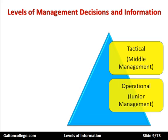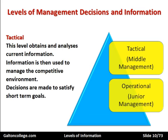Then we have tactical, which is generally the province of middle management. This level obtains and analyses current information, and that information is then used to try and gain a competitive advantage. They're trying to satisfy short-term goals — produce a good product, have a good position in the market, organise efficiently, look for efficiency savings, and then communicate that back to the operational level to get them to change practices to be more efficient. But they will only do this if it fits in with what top management want. Tactical decision makers are ones in the middle.